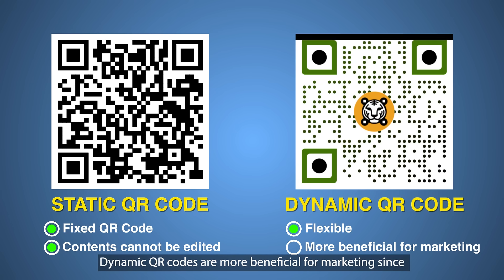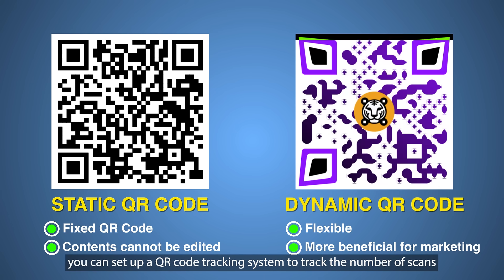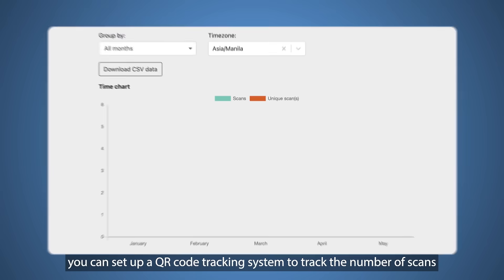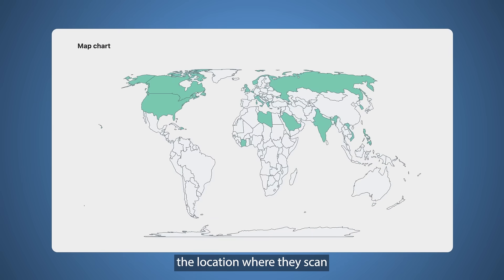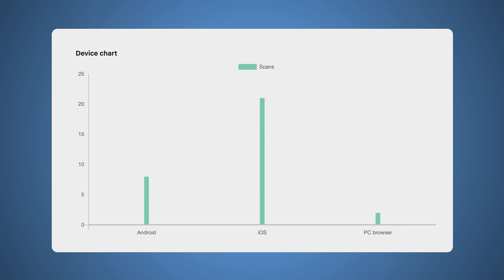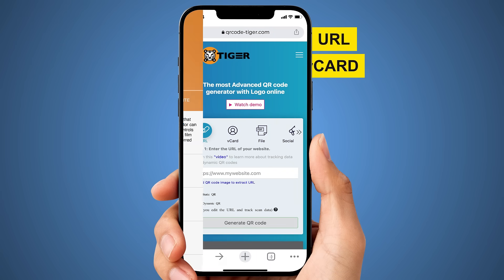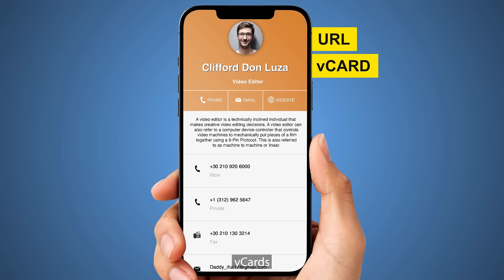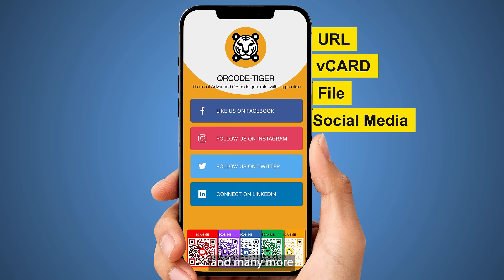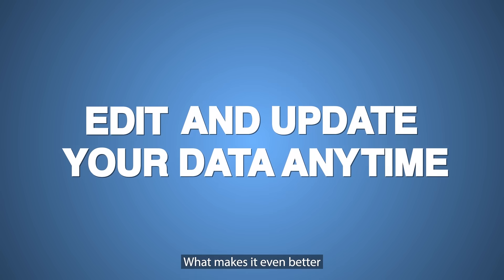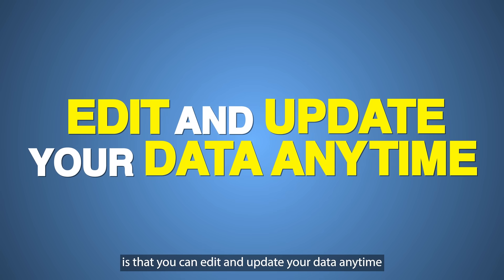Dynamic QR codes are more beneficial for marketing since you can set up a QR code tracking system to track the number of scans, the location where they scan it, and the user's device type. You can generate QR codes for your URLs, vCards, PDF files, social media accounts, and many more. What makes it even better is that you can edit and update your data anytime.